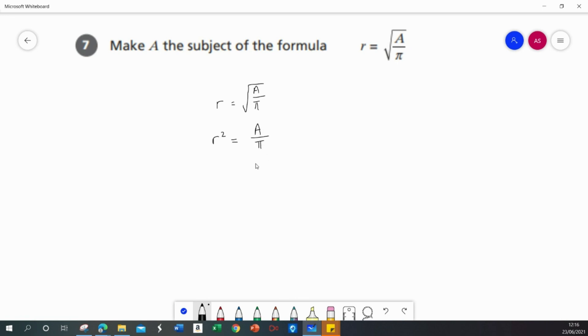I'm trying to make a the subject. At the moment a is divided by pi, so the inverse operation would be multiply by pi. I'm going to multiply both sides by pi so it balances. That gives me pi r squared equals a.